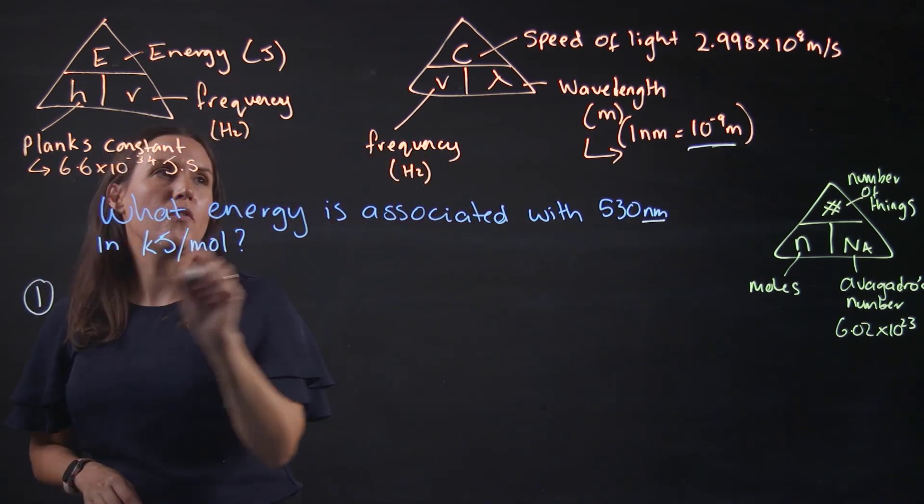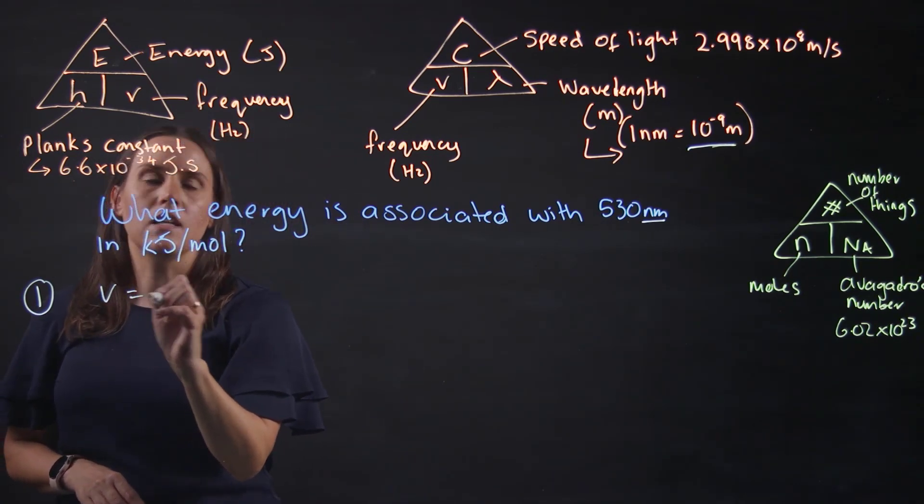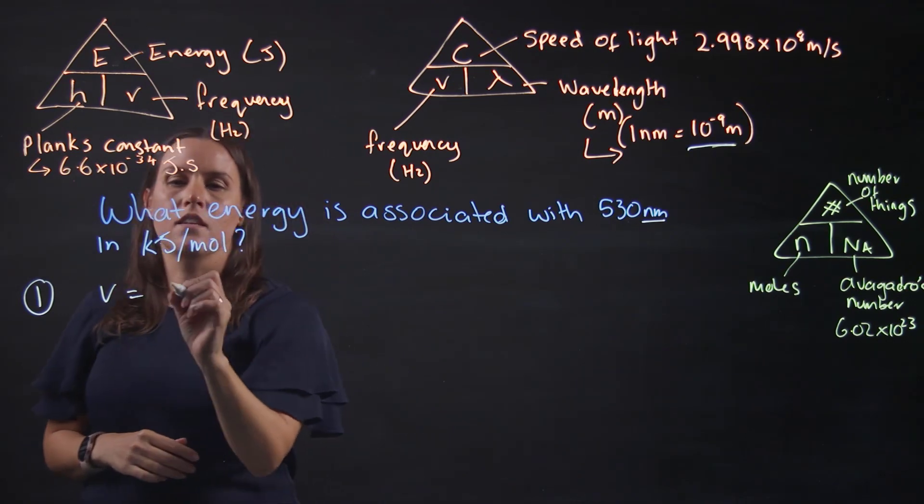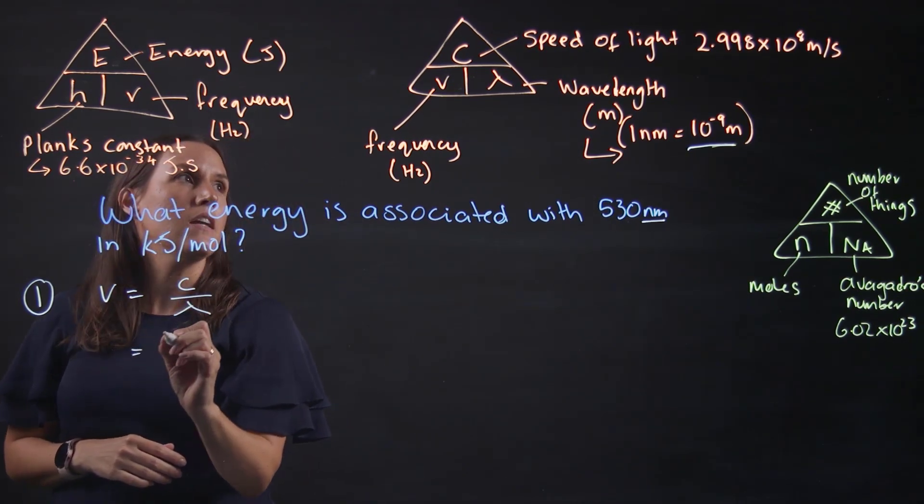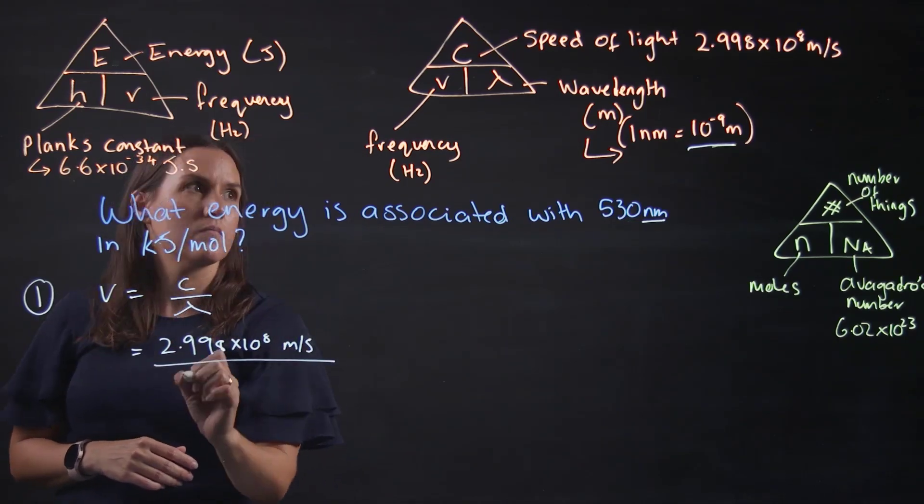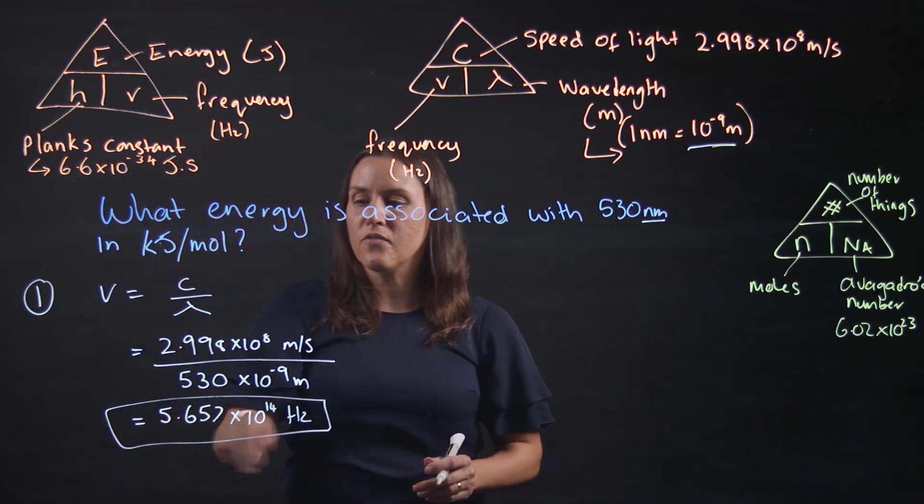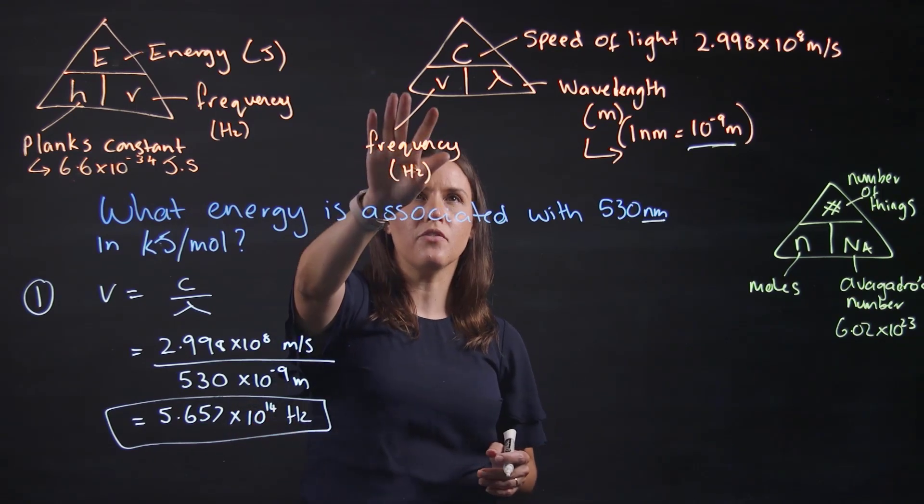First of all, converting into the frequency. The frequency equals the speed of light divided by the wavelength, so c divided by your wavelength. That gives us 5.657 by 10 to the 14 hertz, so that's our frequency.